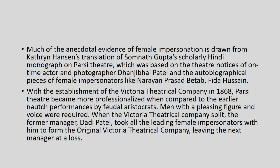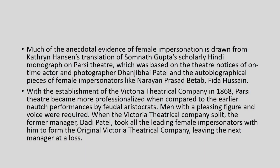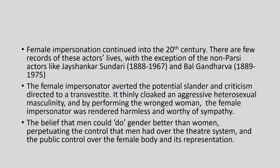With the establishment of the Victoria Theatrical Company in 1868, Parsi theatre became more professionalized compared to earlier large performances by feudal aristocrats. Men with a pleasing figure and voice were required. When the Victoria Theatrical Company split, the former manager Dhanji Bhai Patel took all the leading female impersonators with him to form the original Victoria Theatrical Company, leaving the next manager at a loss. Female impersonation continued into the 20th century, with few records of these actors' lives, with the exception of non-Parsi actors like Jayashankar Sundari (1888–1967) and Bal Gandharva (1889–1975).